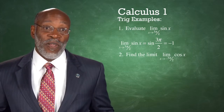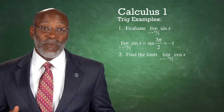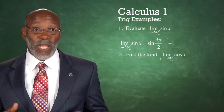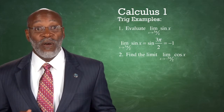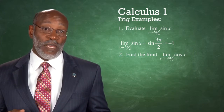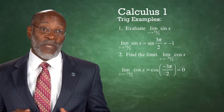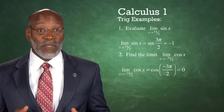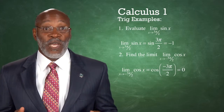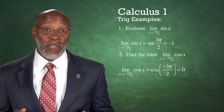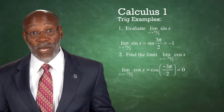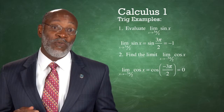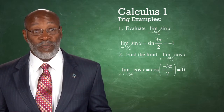Example 2: Find the limit as x tends to negative 3π/2 of cosine x. The limit as x tends to negative 3π/2 of cosine x is equal to the cosine of negative 3π/2, which equals 0.